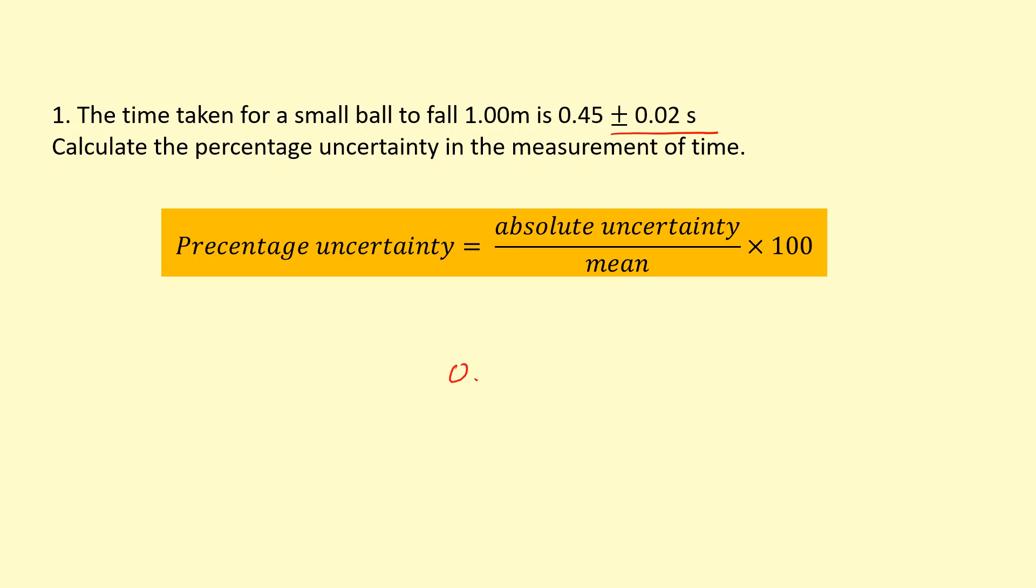So 0.02 divided by 0.45, our measurement, times 100. That gives us 4.4%. So our measurement there, 0.45, could be 4.4% too big or too small.